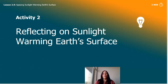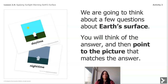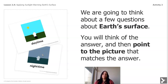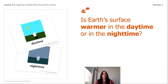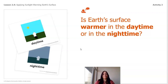Now we're going to reflect on sunlight warming Earth's surface. We'll think about a few questions and point to the picture that matches the answer. If I say daytime, you point to the correct picture. Is Earth's surface warmer in the daytime or in the nighttime? Yes — the Earth's surface is warmer in the daytime, just like in the playground.